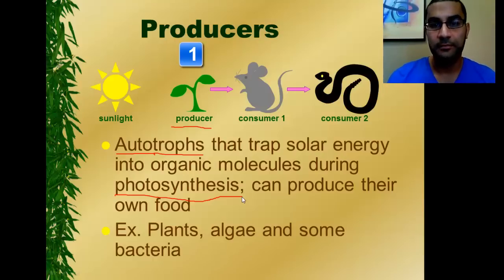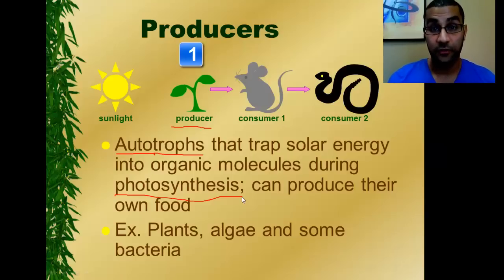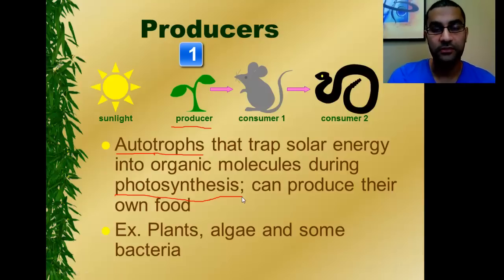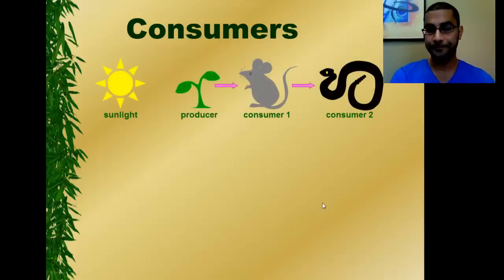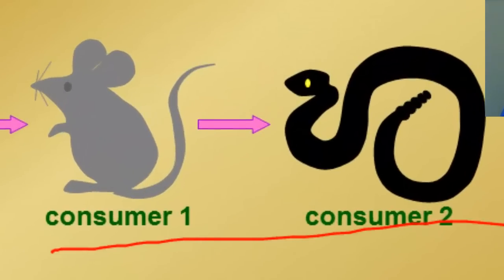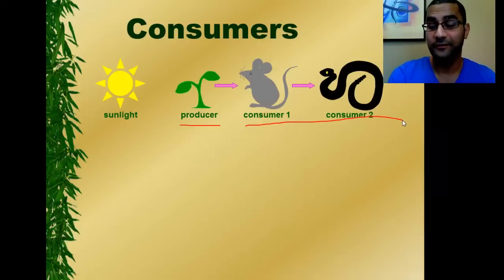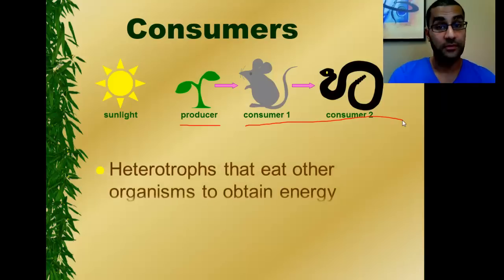Typically, when we talk about producers, we're referring to organisms in kingdom Plantae, or plants, but there are other photosynthetic organisms too. Trophic level number one is always represented by a producer. Consumers represent every other trophic level in an ecosystem. The general definition of a consumer is anything that cannot be a producer — if they're not capable of making their own food, they have to get it from somewhere else, and they're considered a consumer.